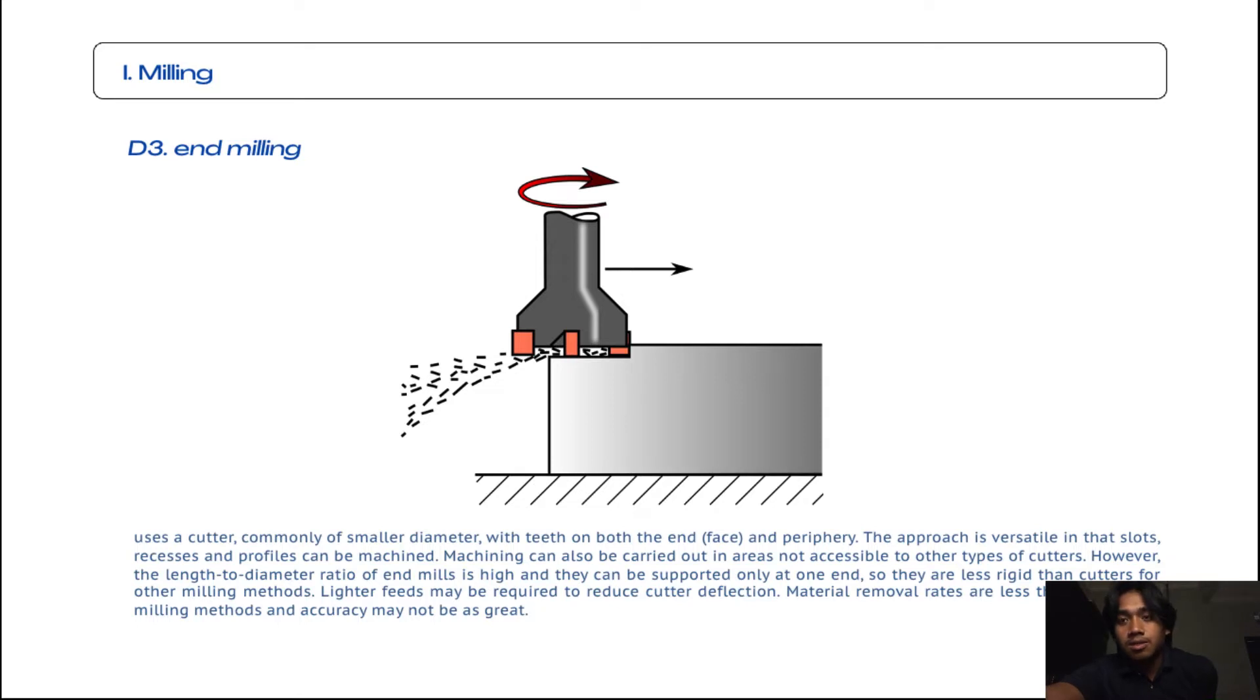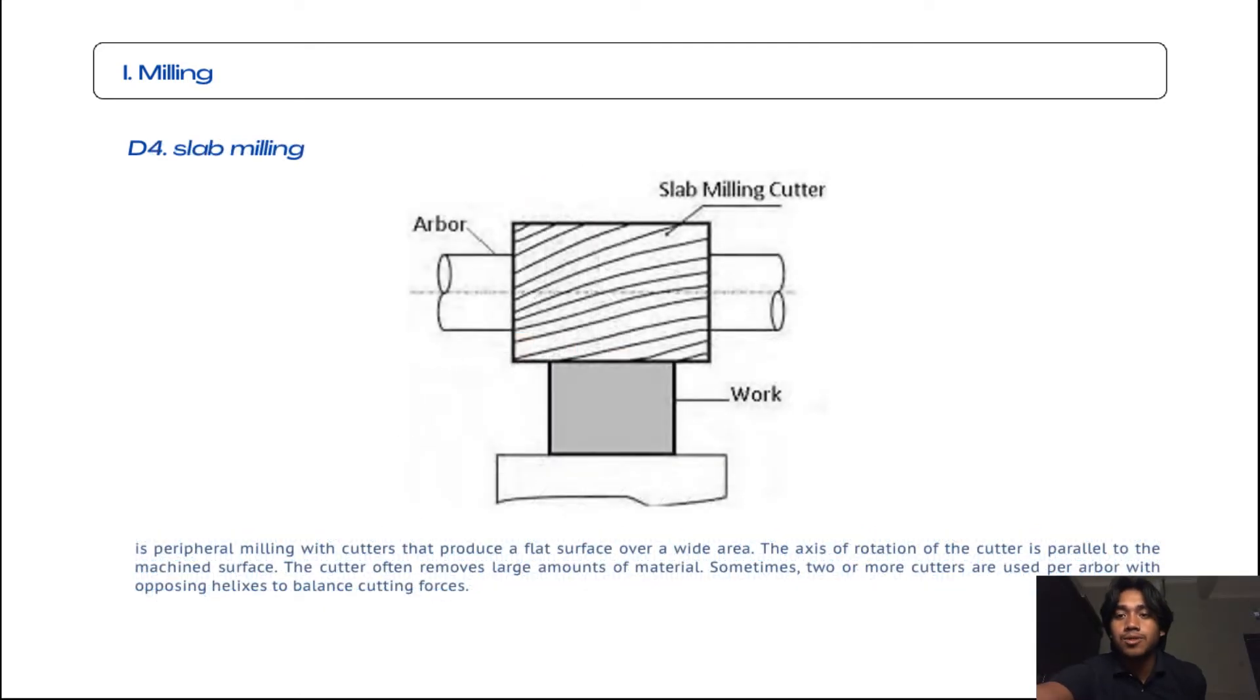The fourth subtopic is slab milling. Slab milling is peripheral milling with cutters that produce a flat surface over a wide area. The axis of rotation of the cutter is parallel to the machine surface. The cutter often removes large amounts of material. Sometimes two or more cutters are used per arbor with opposing helixes to balance cutting forces.